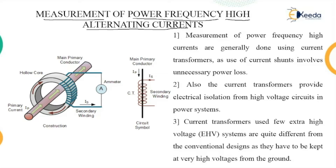Now in this case, you can see the diagram. This diagram shows the construction of a current transformer. This current transformer is circular, that is toroidal in nature. One side of it has a certain number of turns of coil placed on one side of the core.